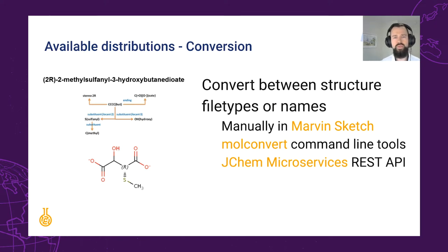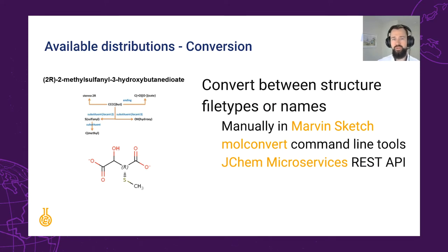Most ChemAxon applications are highly agnostic to cheminformatic file types. However, there remain many occasions where conversion in bulk is necessary. While one-to-one conversion is available in most of our sketching tools, and bulk has been available for some time in the command line tool MolConvert, the JChem microservices now also enables you to perform this through a REST API.